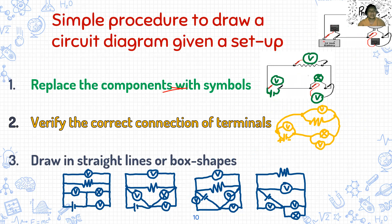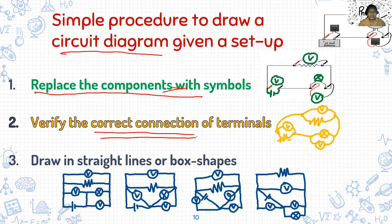This is why it is very important that we know how to relate the actual setup with the diagrams that we are using in the problems that we'll be solving. The simple procedure to draw a circuit diagram: first, replace the components with symbols — label them, voltmeter, voltage source. Then, verify the correct connection of terminals. Make sure that voltmeters are connected in parallel. If you make a wrong connection, the diagram will be incorrect.